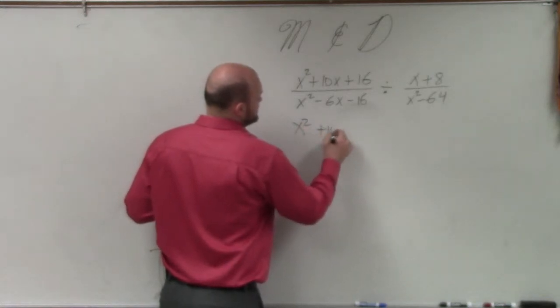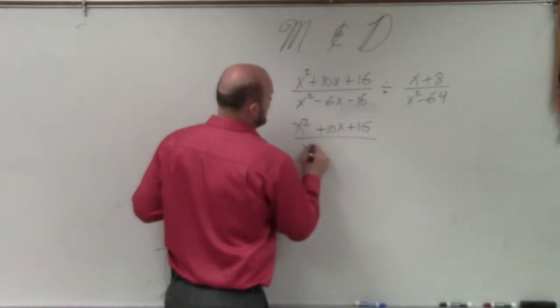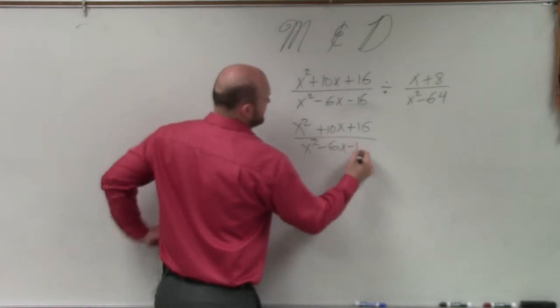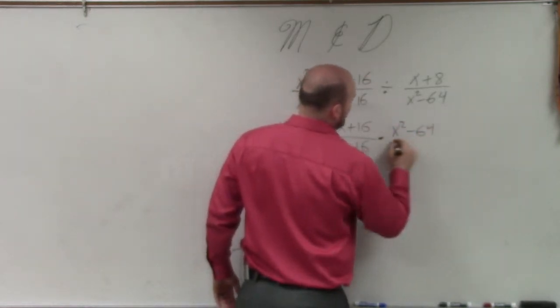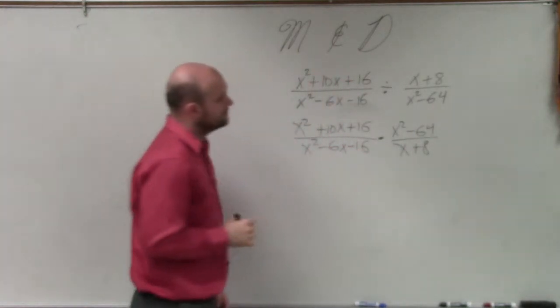So x squared plus 10x plus 16 divided by x squared minus 6x minus 16 times x squared minus 64 divided by x plus 8.